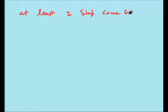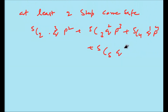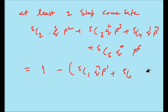If the question asks for at least two ships coming back safe, you add the probabilities for 2, 3, 4, and 5 ships: 5C2 p² q³ + 5C3 p³ q² + 5C4 p⁴ q¹ + 5C5 p⁵ q⁰. Equivalently, you can compute 1 minus the probability of fewer than 2 ships being safe, that is 1 minus (5C0 p⁰ q⁵ + 5C1 p¹ q⁴).